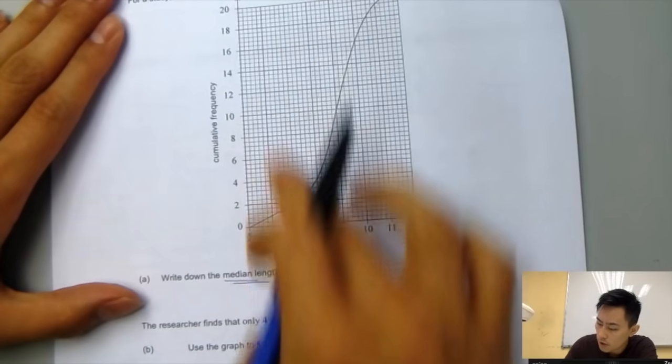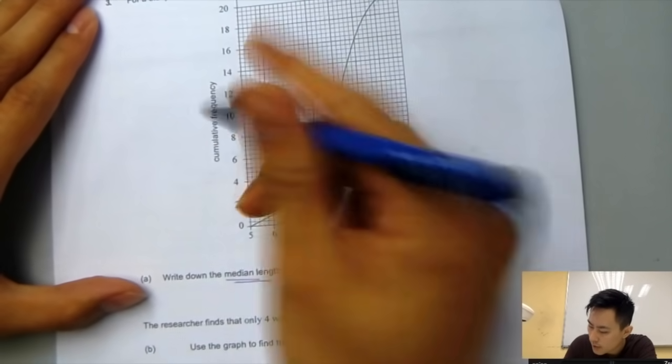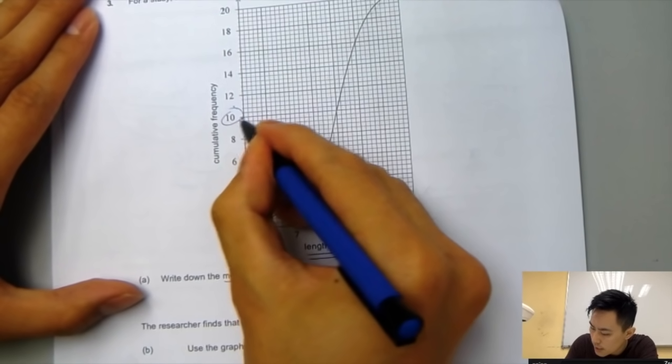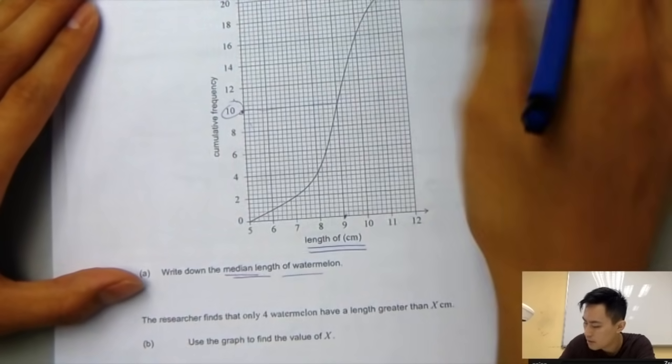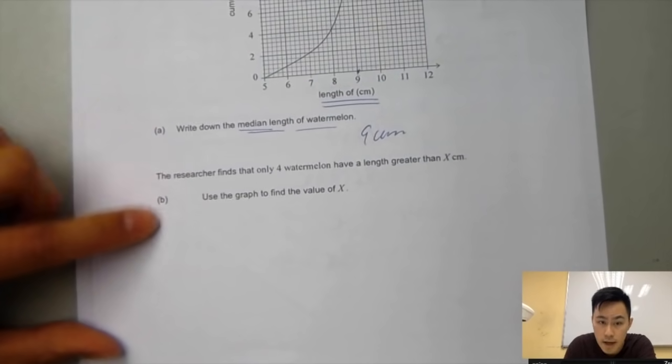So how do you find the median from the cumulative graph? It's always find the middle. 20 divided by 2 is 10. From here, you draw a line here, then that would be 9 cm. That's it, very easy.